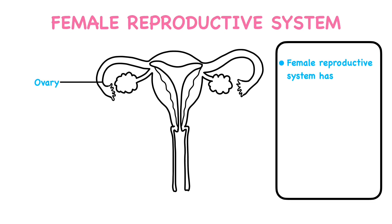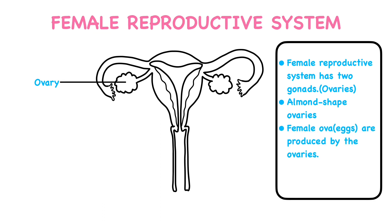The female reproductive system has two gonads, known as ovaries. The shape of the ovaries is almond shape. Female gametes are produced by the ovaries — they are known as eggs or ova. The egg is formed by one out of the two ovaries each month. Also, the ovaries secrete female sex hormones: estrogen and progesterone.